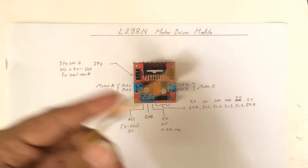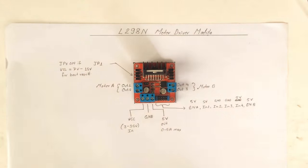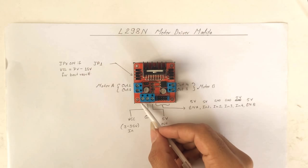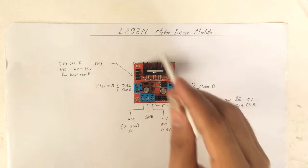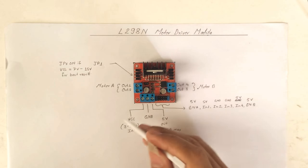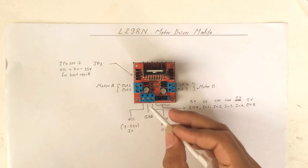This connector is for power supply. The first pin written as VCC is the supply voltage for this module as well as for our motors, which can support from 3 volt to 35 volt, and this is an input terminal. The center one written as ground is our ground terminal which is common for both input and output.